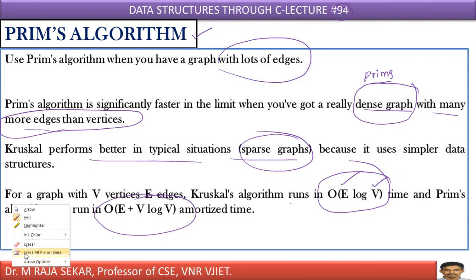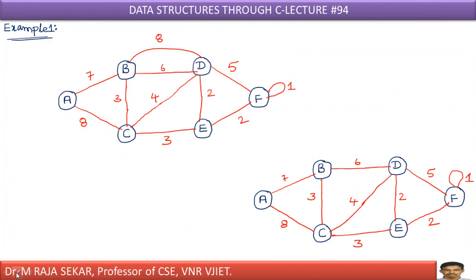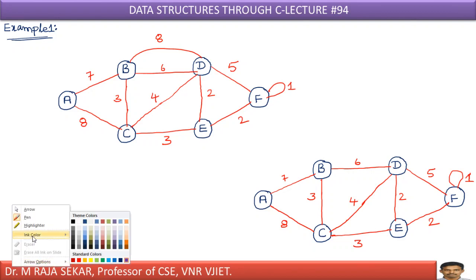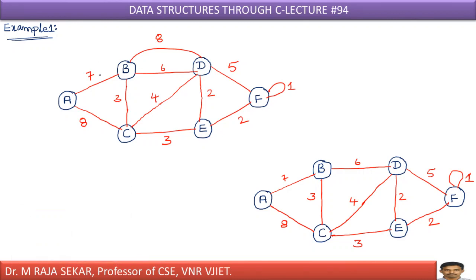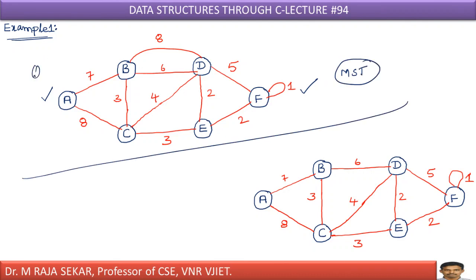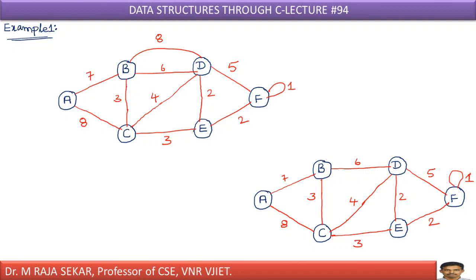Now we will try to understand Prim's algorithm with a simple example. Let me discuss a few examples in this class. If you understand all these examples, one can certainly realize the importance of Prim's algorithm. This is the given graph, for which you have to find the minimum spanning tree or minimum cost spanning tree. Before finding the minimum cost spanning tree, your graph must be free from parallel edges. Here I have a difficulty — these two edges are parallel edges, and I must remove one of them.